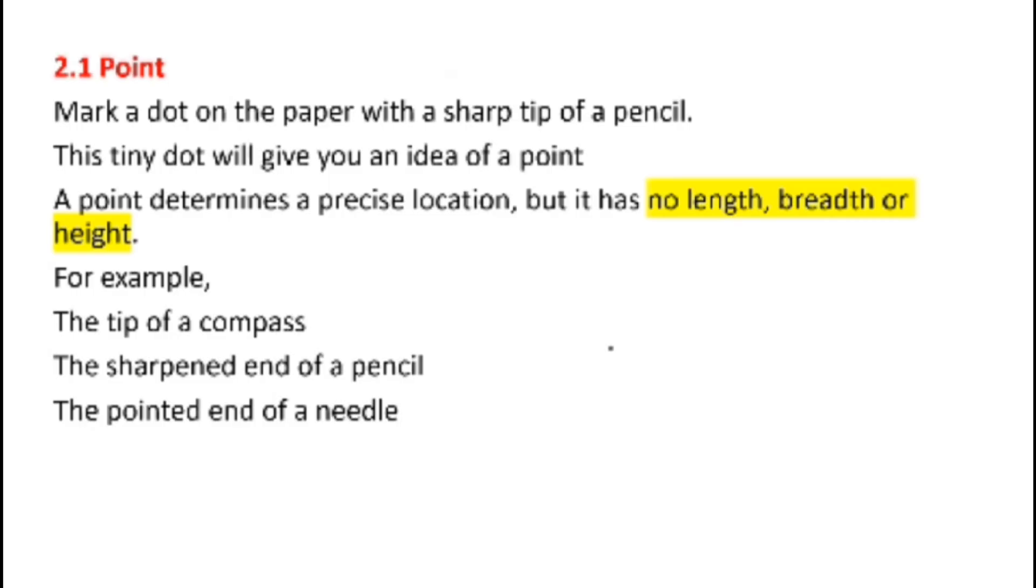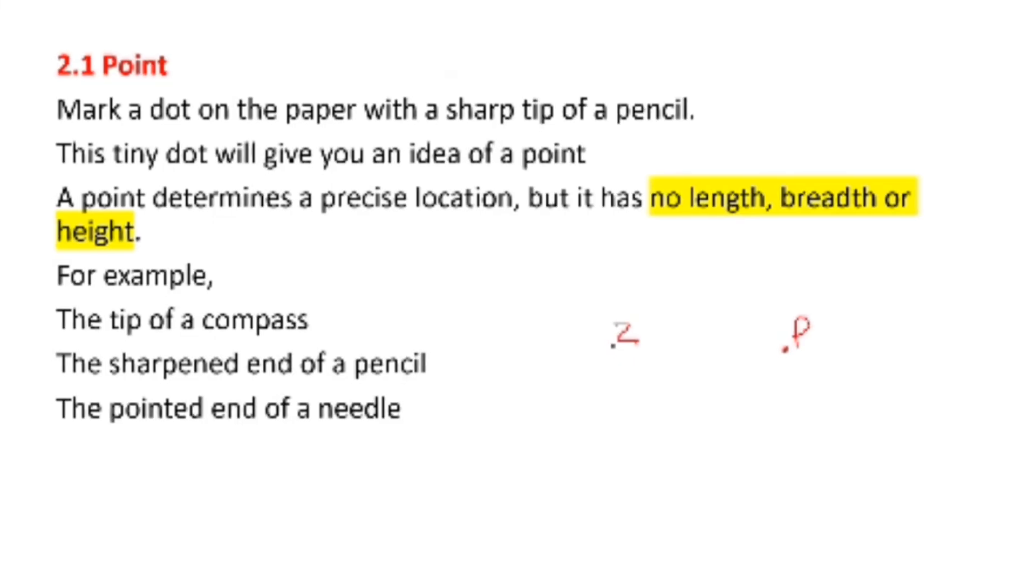Now how do we represent point? We can represent points using capital letters. For example, I can say this is point Z. If I make one more point, I can say this is point Z. These points are read as point Z.